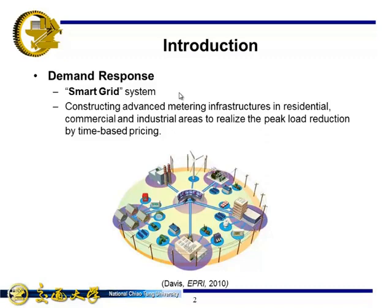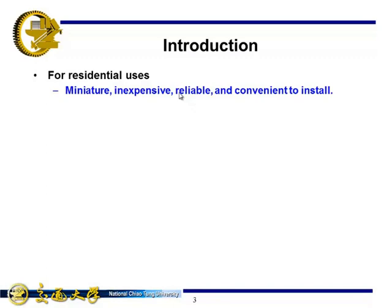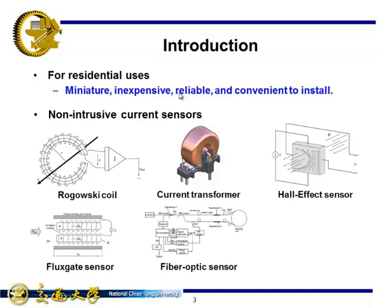Power sensors are required in the electrical management system. For residential uses, miniature, inexpensive, reliable, and convenient to install and use are the key features. The contactless sensing scheme would be the prevailing scheme. The contactless current sensors are mostly based on magnetic sensors like Rogowski, current transformer, Hall-effect sensors, flux gate, fiber optic, or piezoelectric.